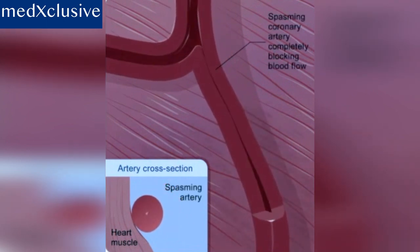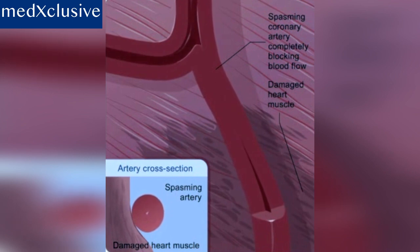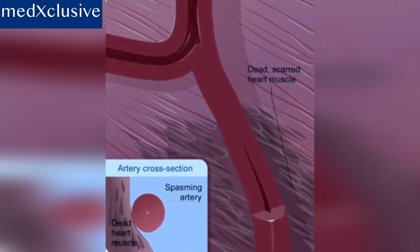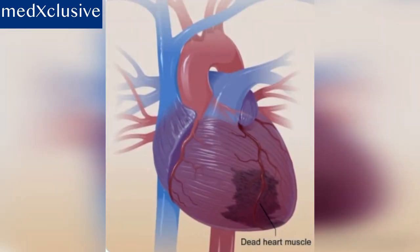Once the flow of blood is blocked by a spasm, a heart attack will happen. When a part of the heart muscle becomes damaged, the heart may not be able to pump blood throughout the body very well. This can cause chest, arm, back, or jaw discomfort or pain, shortness of breath, or other symptoms. If the blockage is not treated and removed within a few hours, the damaged heart muscle will begin to die and be replaced by scar tissue, causing severe and long-lasting symptoms because the heart cannot pump blood well.